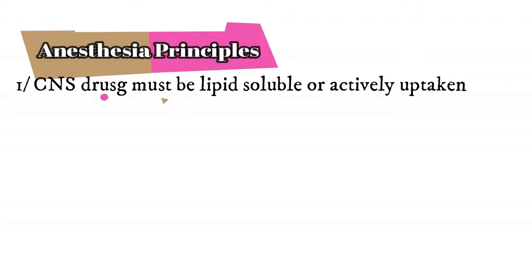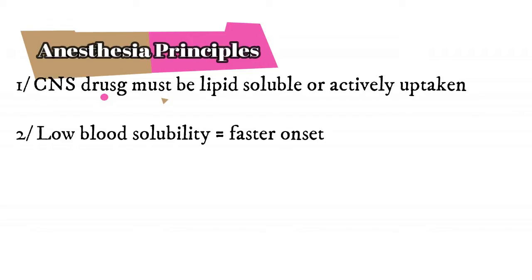Rule number two: if you decrease the blood solubility, the drug would have faster onset of action. Think about it this way — if the drug has high blood solubility and we administer it through the arteries of the arm, by the time it reaches the blood-brain barrier, all of the drug is already diffused throughout the blood and nothing is going to touch the blood-brain barrier. But if the drug has low blood solubility and we administer it through the arteries of the arm, once it reaches the blood-brain barrier, all of the drug will be right there inside the blood, touch the blood-brain barrier, and be uptaken.